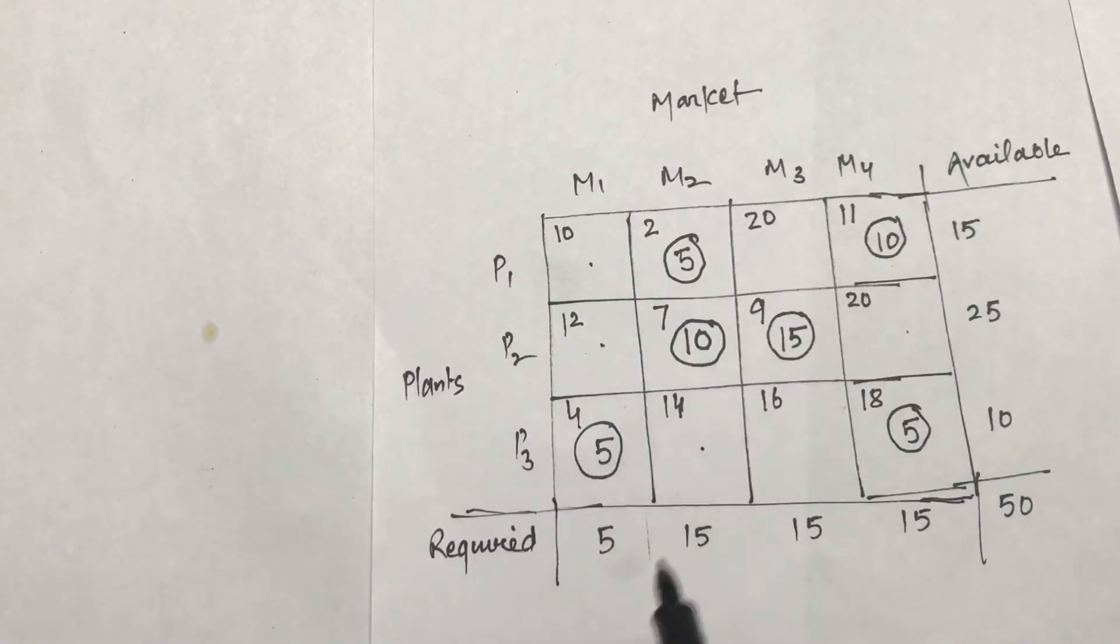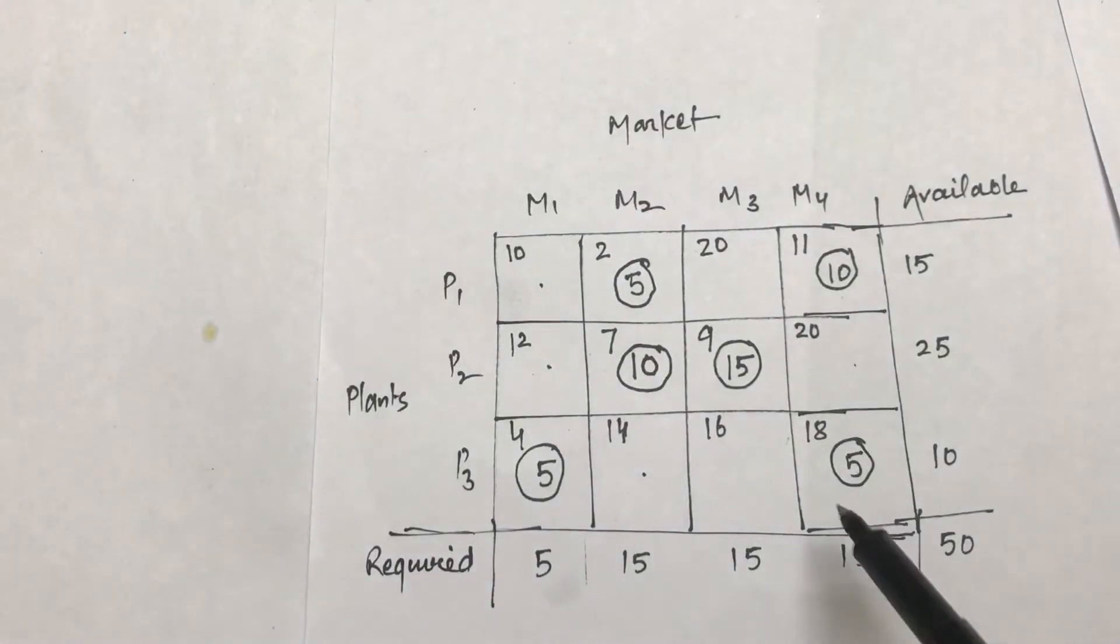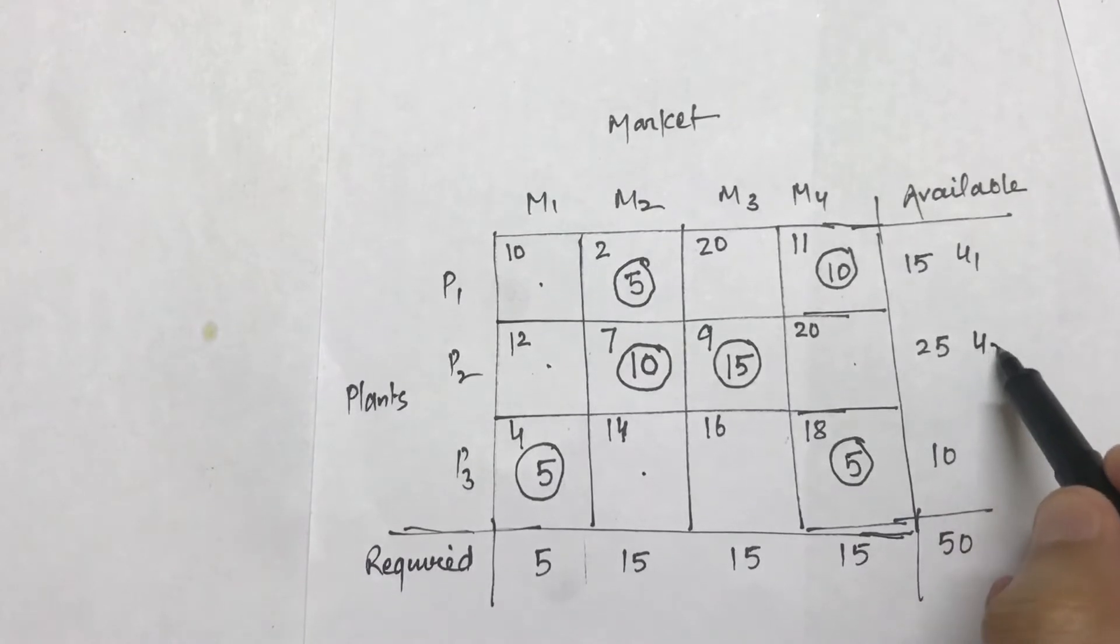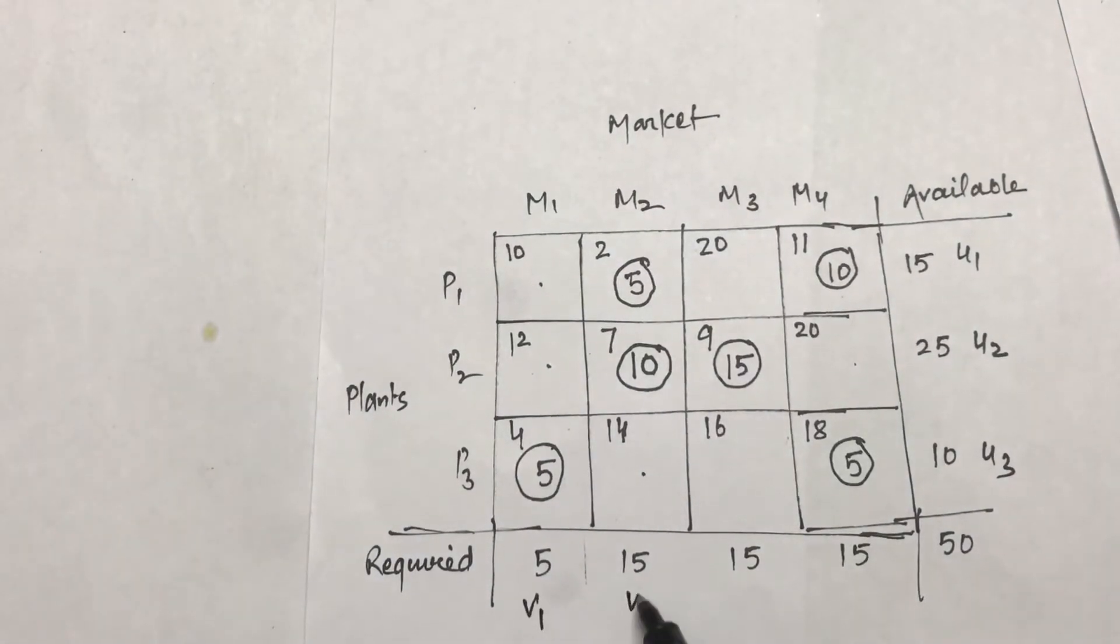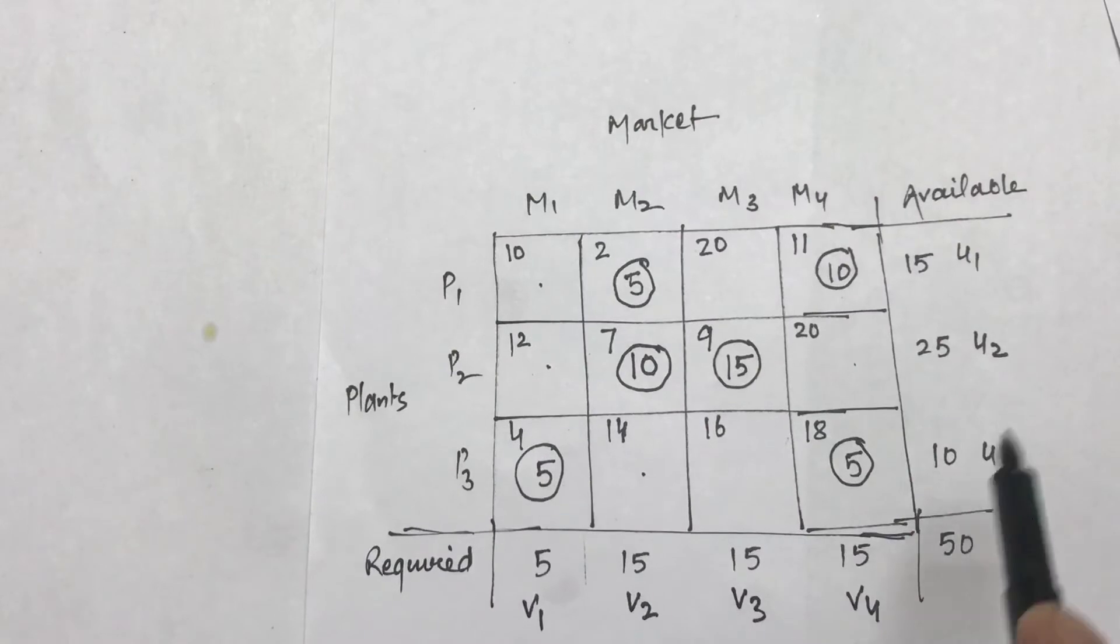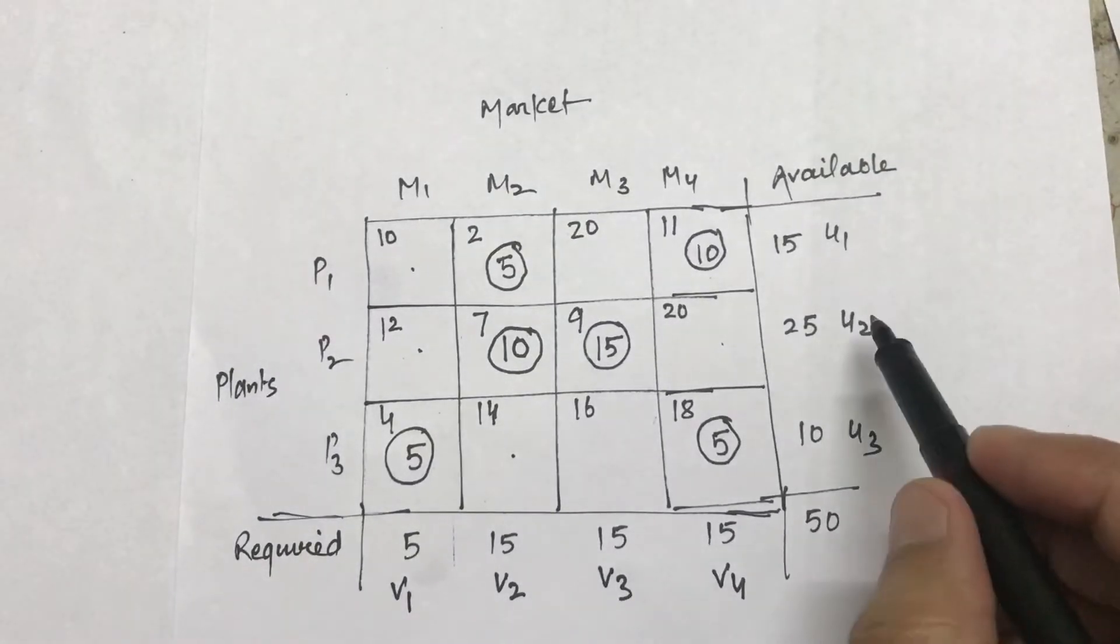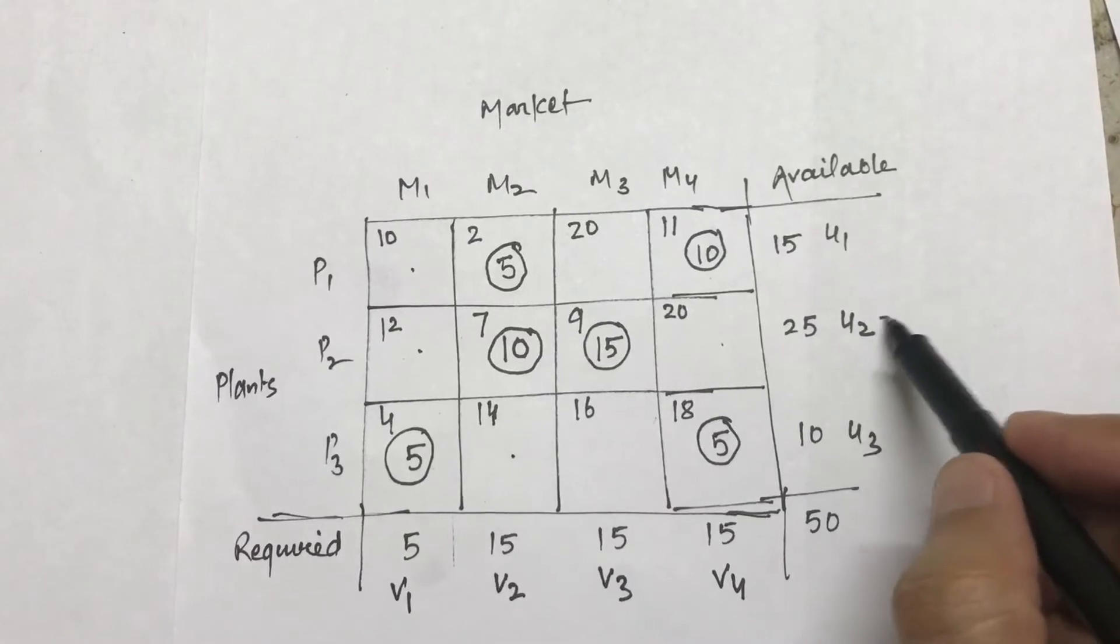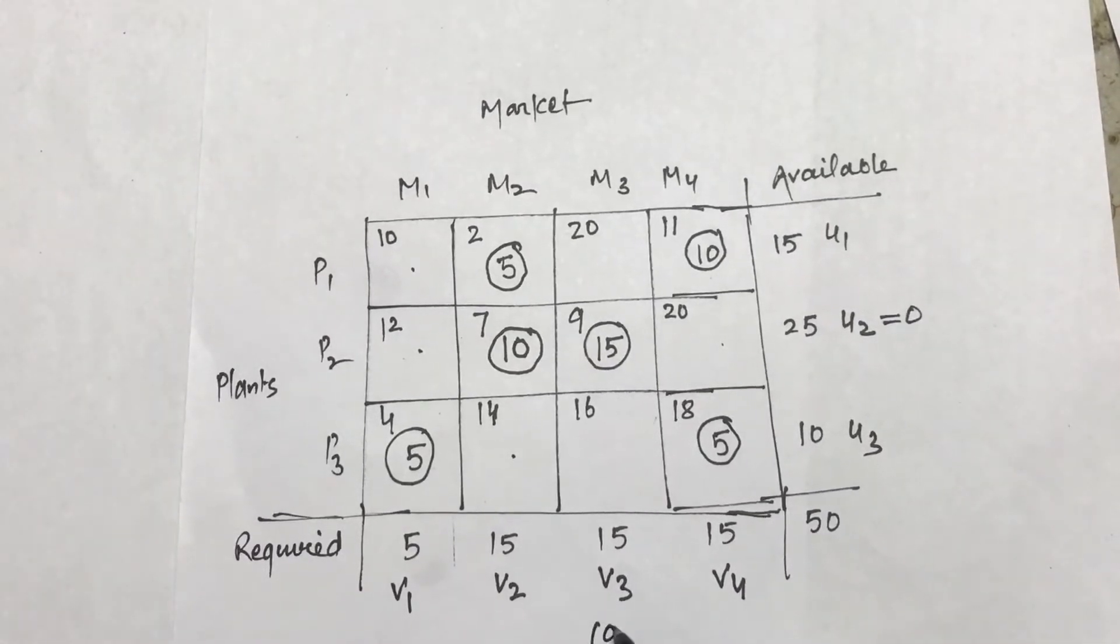Now again I will check this particular thing for optimality. So again I will take u1, u2, and u3, and similarly v1, v2, v3, and v4. I have in all three rows equal allocations, that means 2 in each case. So I can put any u equal to 0. Again I will start by putting u2 equal to 0. So I can easily calculate v2 which is going to be 9, v3 is equal to 9, v2 is equal to 7.